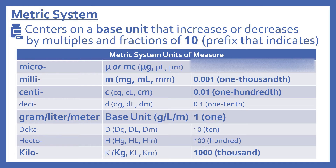Now we'll look more at the metric system. It centers on a base unit that increases or decreases by multiples and fractions of 10, and there's a prefix that indicates its relationship to the base unit. The main thing to look at with this chart is to know the relationship between the prefix and the base units. The base units are gram, liter, and meter.